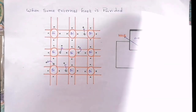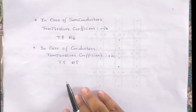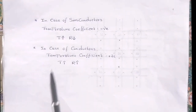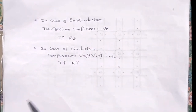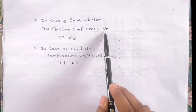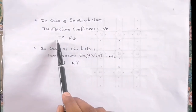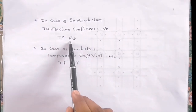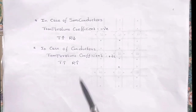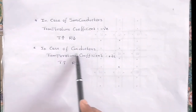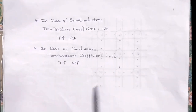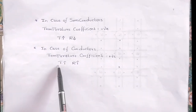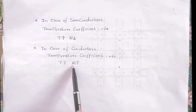Another important point is the temperature coefficient of silicon and germanium — both have a negative temperature coefficient. In the case of a negative temperature coefficient, if we increase the temperature, the resistance of the material will decrease. This is the case for semiconductors. For conductors (metals), the temperature coefficient is positive, meaning if we increase the temperature, the resistance of the material will also increase.